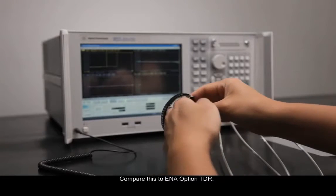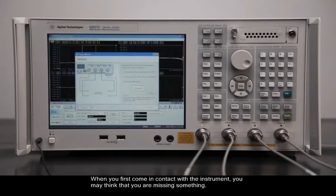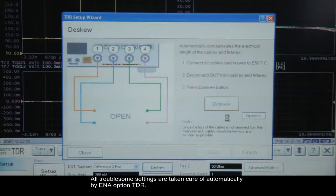Compare this to ENA Option TDR. When you first come in contact with the instrument, you may think that you were missing something. Why can the procedure for DSKU be done with one click? All troublesome settings are taken care of automatically by ENA Option TDR.